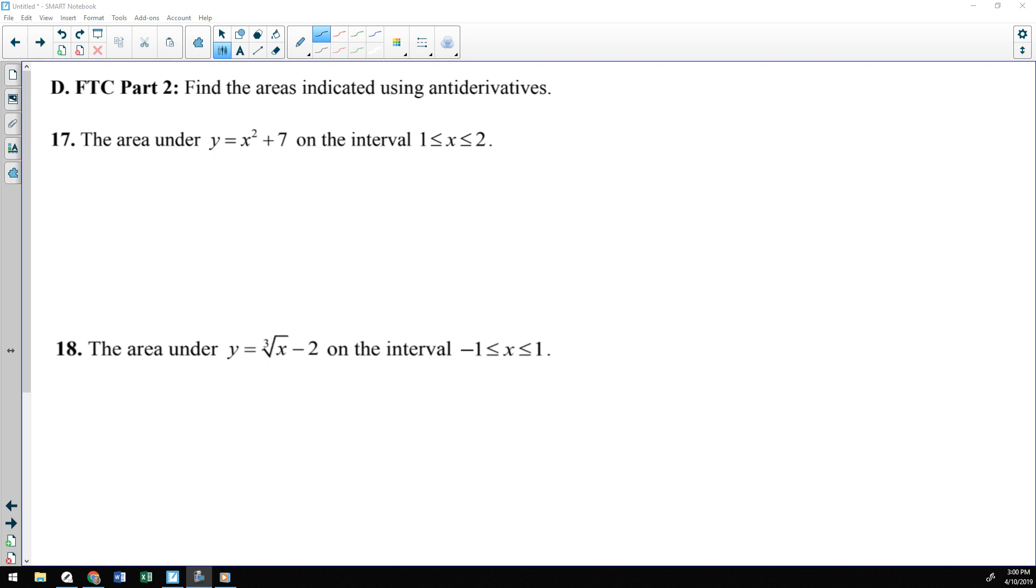All right, moving into the fundamental theorem of calculus. Part two of the fundamental theorem of calculus is using antiderivatives to get exact area. Now, we did exact area through Riemann's sums earlier. To get the exact area through antiderivatives, the area under that function from one to two is the antiderivative from one to two of x squared plus seven.